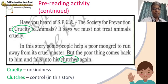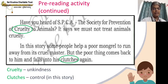In this story, a poor mongrel — a street dog — is being held by a cruel master. Some people help it escape, but the poor thing comes back and falls into the control of the master again. All of you know what a mongrel is — you may remember it from the story 'A Tiger in the House,' which had a mongrel puppy. When we read the story, we will understand how this happens.